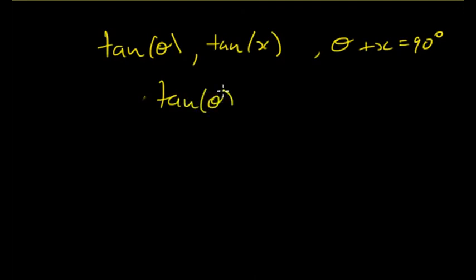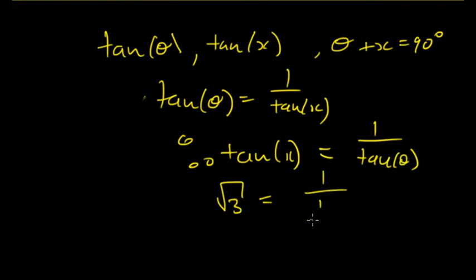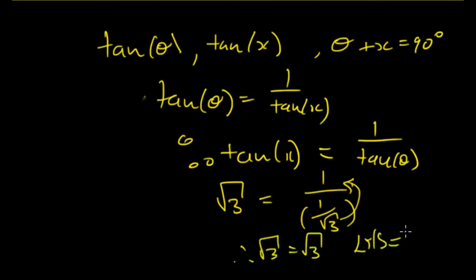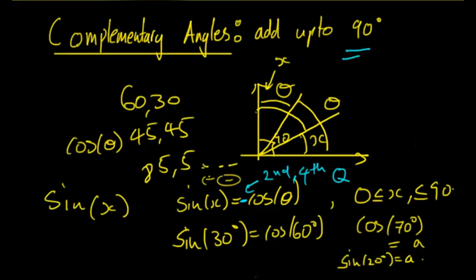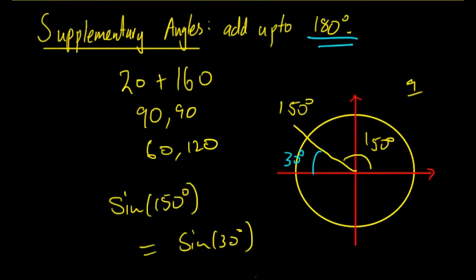You can also rearrange the formula: if tan θ equals 1 over tan x, then tan x equals 1 over tan θ. Using those values, root 3 equals 1 over (1/√3), which brings √3 to the top, so √3 equals √3 — the left-hand side equals the right-hand side. A good way to remember the difference: complementary has a 'c' for 'corner', and a corner is 90 degrees; supplementary angles form a straight line, so the 's' reminds you of a straight line.